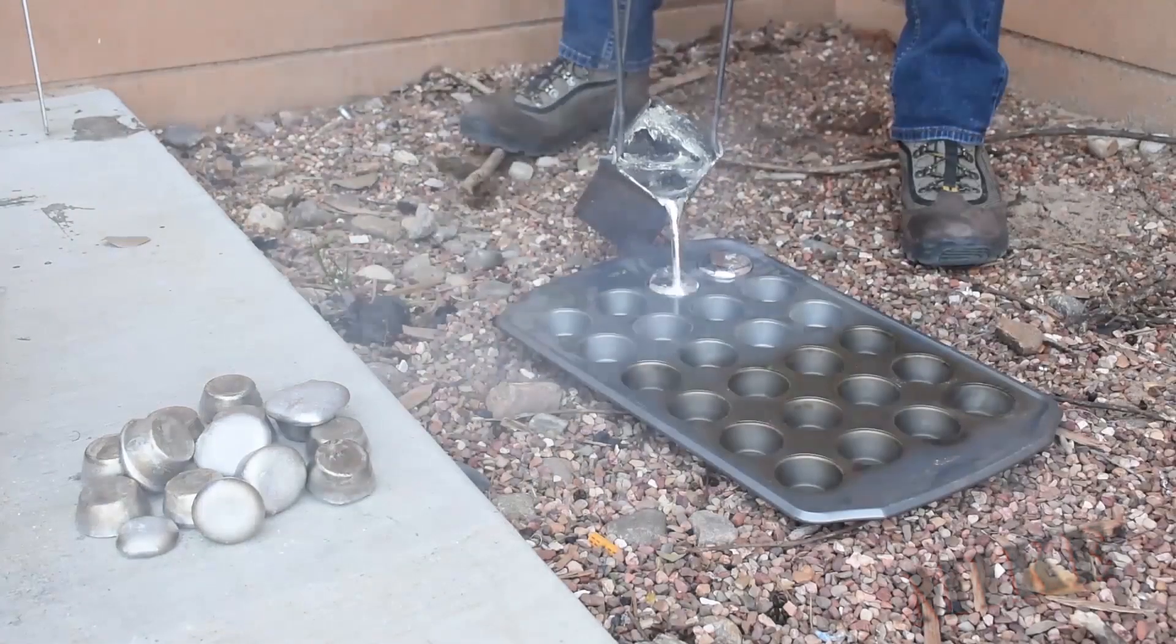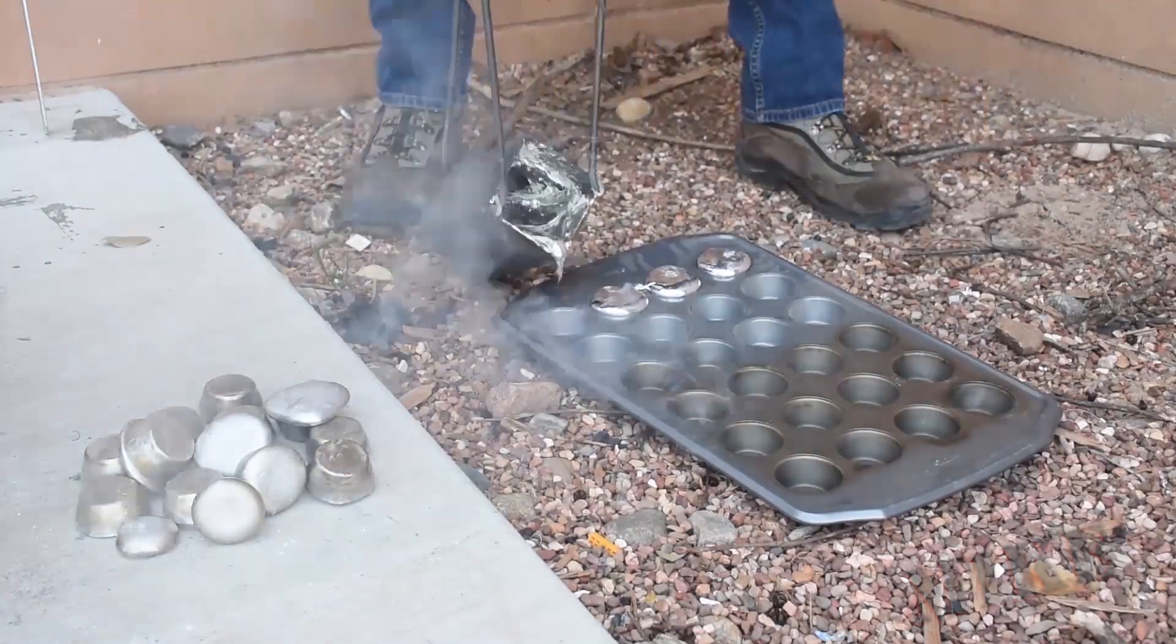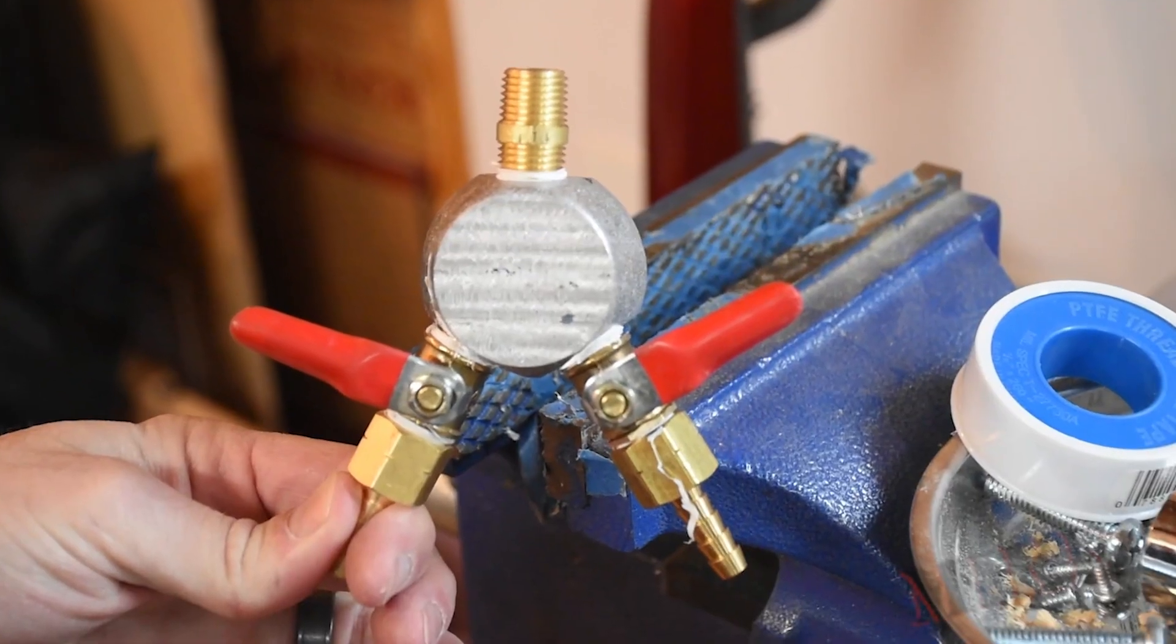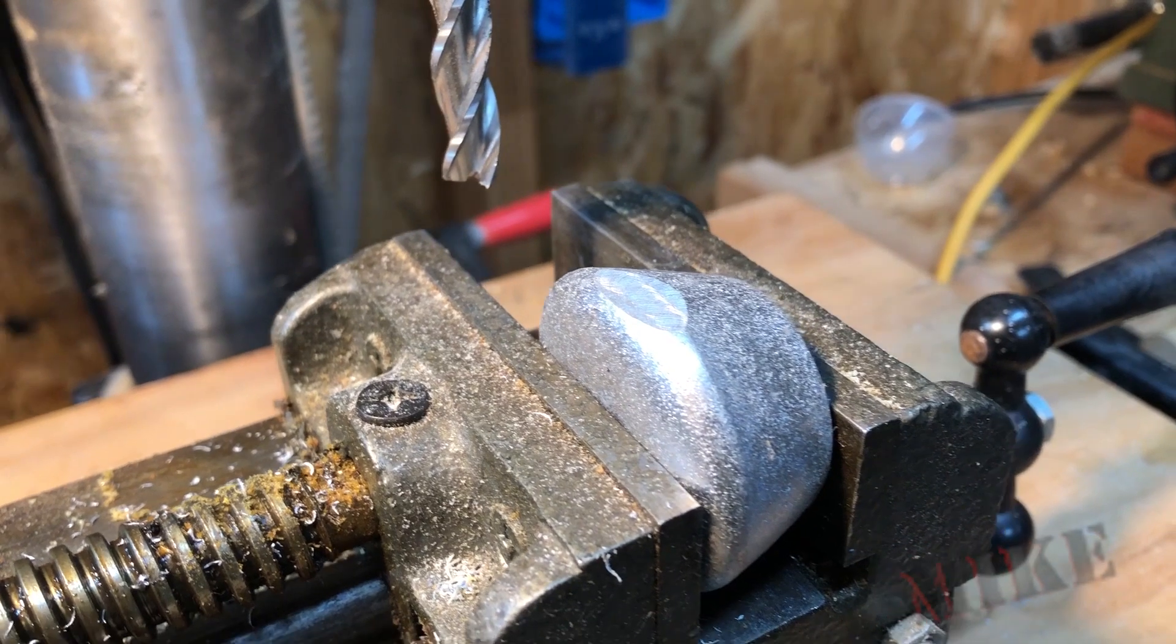Hi, I'm Mike Thompson. I'm going to show you how I turn these aluminum cast muffins into a Y splitter for my beer CO2.